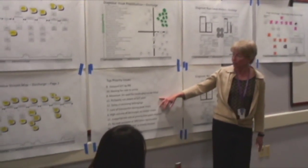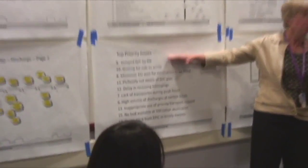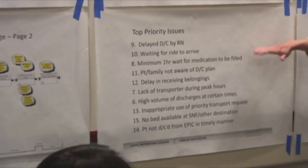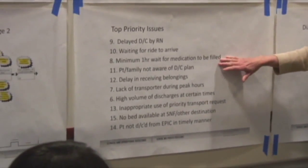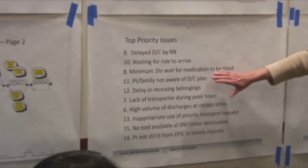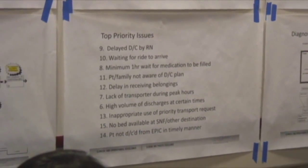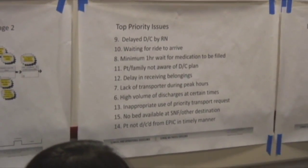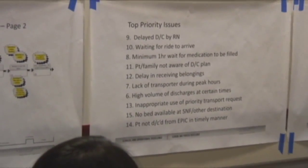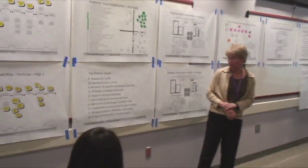The top priority issues are: delay in discharge because the nurse is busy, waiting for a ride as a big delay, minimum one hour for medications to be filled, patient or family not aware they're being discharged that day, delay in receiving belongings, a high volume of discharges at certain times based on physician timing, not prioritizing transport and discharge, and an Epic issue. Those are the top ones we focused on, and we narrowed it down to the top two.